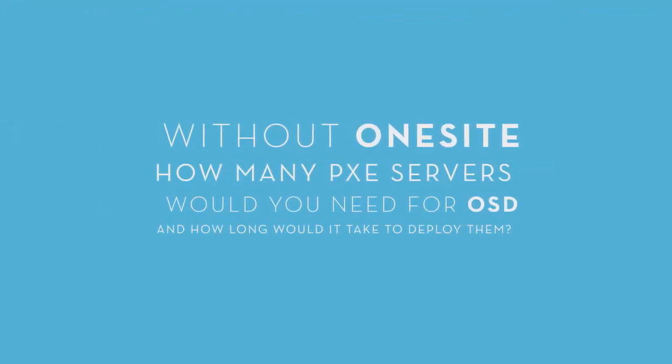The best example I can give on how we've eliminated distribution points with Adaptiva OneSite is with a client where we've eliminated 2400 and turned that into 7 for their SCCM infrastructure. Without OneSite Peer-to-Peer PXE, for just a single customer, we would need 2400 PXE service points. Having OneSite and Peer-to-Peer PXE enables us to instantly have PXE services across the environment with the deployment of the Adaptiva Client.